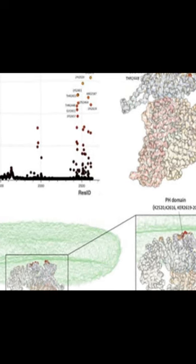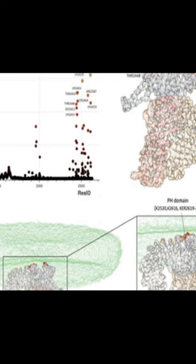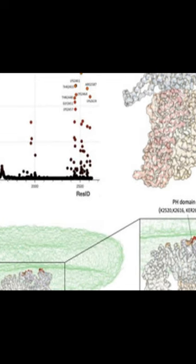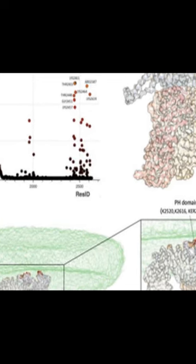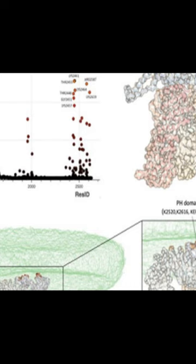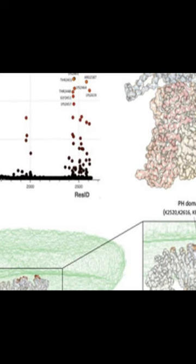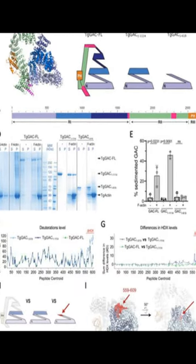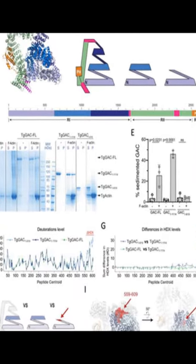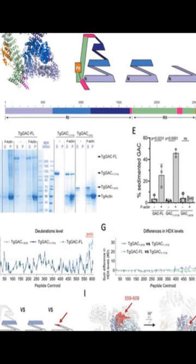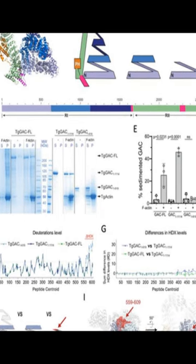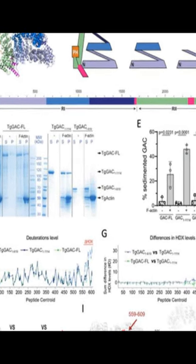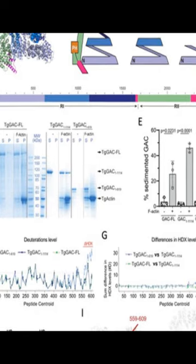New research has revealed the structure of Toxoplasma gondii GAC, which consists of a supercoiled armadillo repeat region that adopts a closed ring conformation. This structure provides insight into how GAC assembles and regulates itself within the glidiosome, allowing it to perform its crucial role in the invasion process.